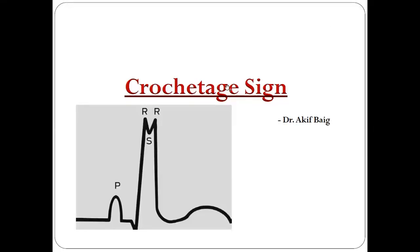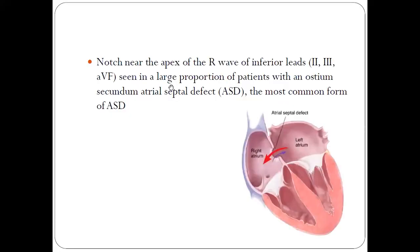Welcome to my YouTube channel, Dr. Akif Beg. Today we'll be talking about the Crochetage sign in ECG. The Crochetage sign is defined as a notch near the apex of the R wave in inferior leads 2, 3, and aVF, seen in patients with ostium secundum type of ASD — the ostium secundum type of atrial septal defect.